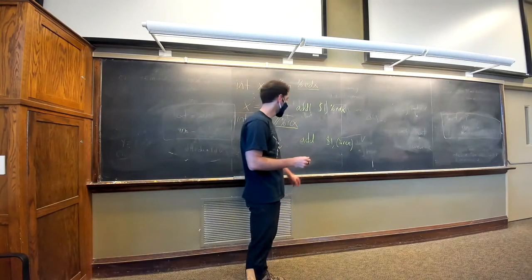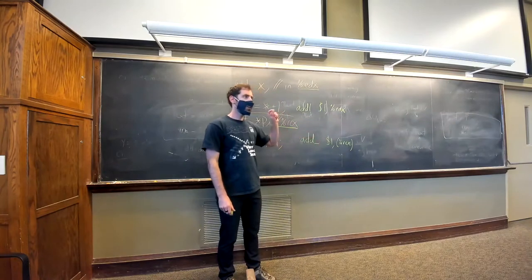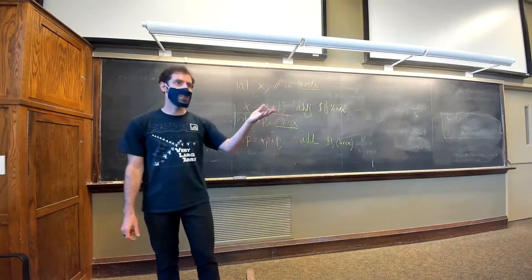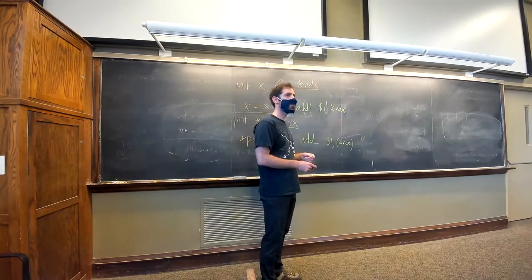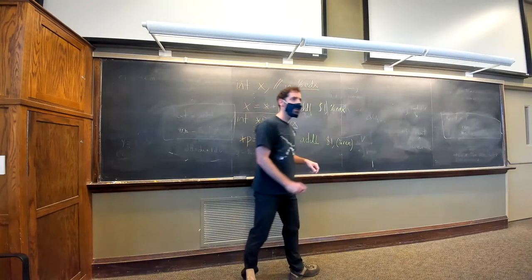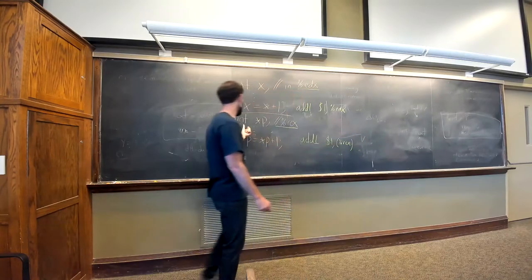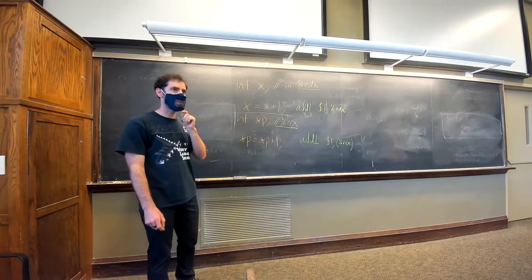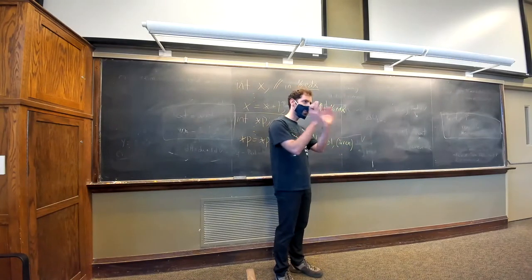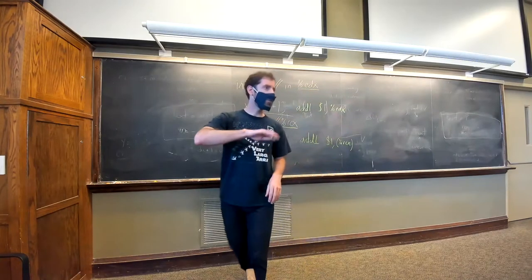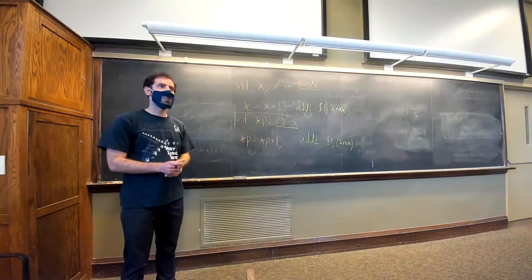How about our pointer version of adding 1? This width specifier tells us how many bytes to read or write at the source and destination. Since p is pointing to an integer which is four bytes, we still use addl — because we want to write four bytes at wherever this address is. Our main difference is that we put the register in parentheses to dereference it as a pointer, go to memory, get the value from there, and write the result back.